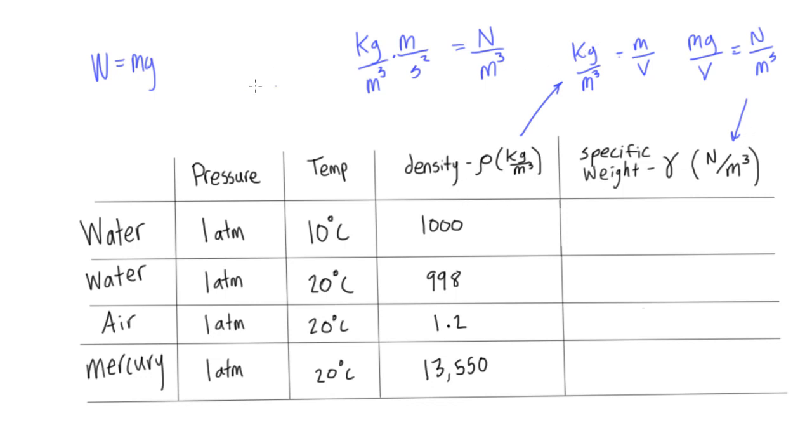Hopefully that's pretty straightforward. So if we're given density in a table, you'd be provided a table like this on your test. So don't worry about that. They're in the back of the textbook. So we just take density times 9.81 meters per second squared, and that's going to give us a specific weight of water at 10 degrees Celsius of 9,810 newtons per cubic meter.